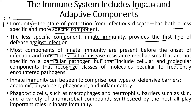Innate immunity can be seen to comprise four types of defensive barriers: anatomic, physiologic, phagocytic, and inflammatory. I'll be discussing all four of these.